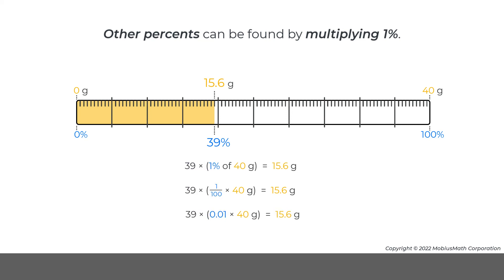In each of these calculations, 39 is multiplied by 1% of 40 grams, or 1 one-hundredth times 40 grams.